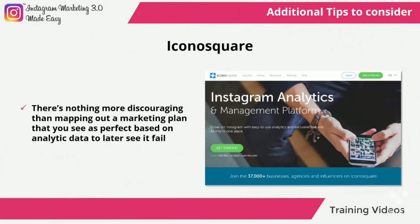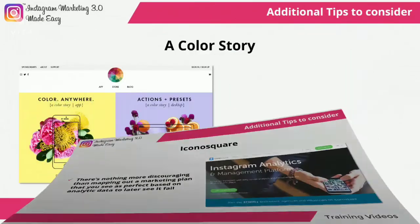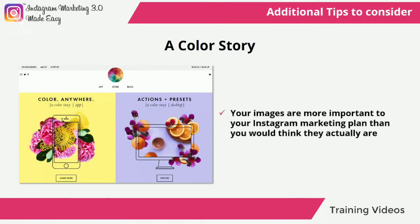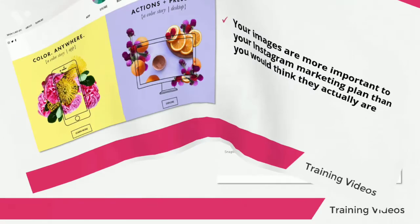Iconosquare — there's nothing more discouraging than mapping out a marketing plan that you see is perfect based on analytic data, only to later see it fail. Iconosquare is a dedicated analytics tool that will allow you to analyze data from all angles, such as what hashtags would work best for you and what times of day are best for posting. A Color Story — your images are more important to your Instagram marketing plan than you would think, and using an app such as A Color Story to enhance your marketing images will give your Instagram assets a look that is more professional and unique than what you would achieve using Instagram filters.